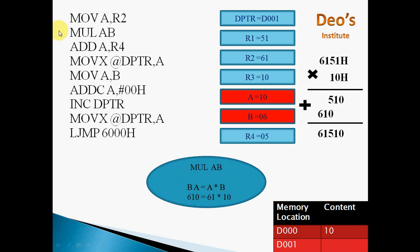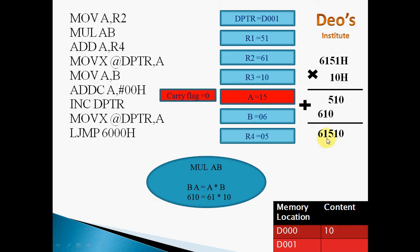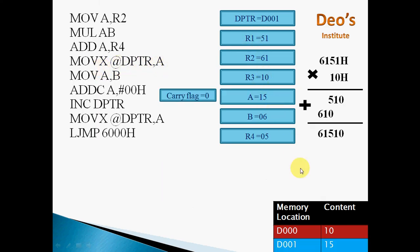After this multiplication, contents of A will be 10 and contents of B will be 06. Now ADD A, R4 — we previously stored the higher byte (5) from the first multiplication in R4. So we add the lower byte 10 to the previous carry 5: 10 plus 5 equals 15. The result 15 is stored in the accumulator. The carry flag is not generated — carry flag is 0. We then move this 15 to memory: MOVX @DPTR, A — so 15 will be moved to D001H, since DPTR now contains D001H.